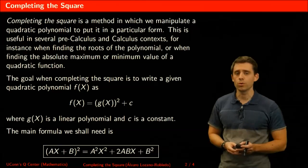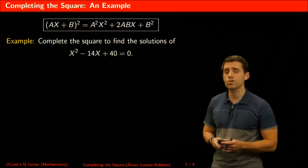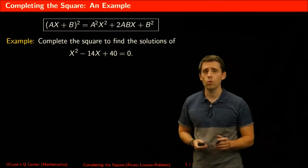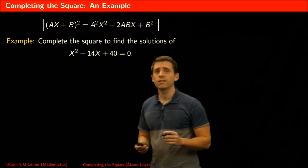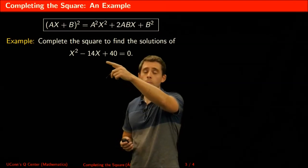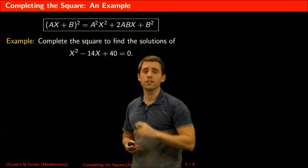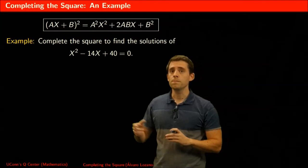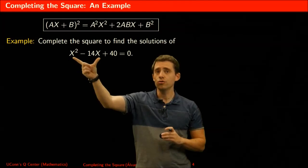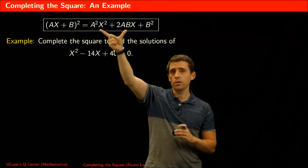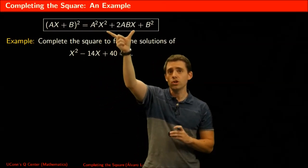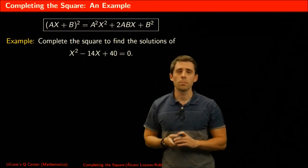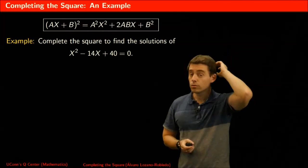Let's see an example of how this works. Suppose we want to find the solutions of a quadratic polynomial using the method of completing the square. My hope is that the best scenario would be that this is actually the square of a polynomial — if that were the case, I'd basically be done. So I'm going to try to match these two terms to what the square of a polynomial looks like, which will tell me what a and b are, and from there I'll be able to complete the square.